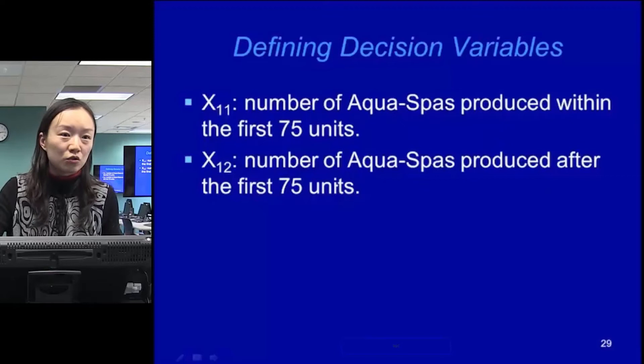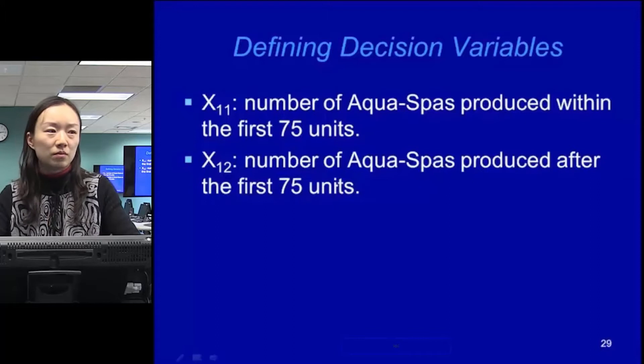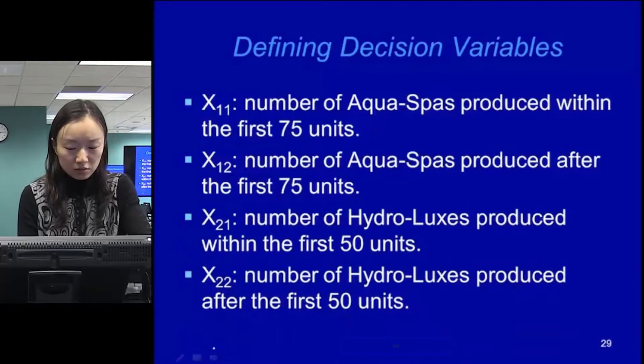We'll use x11 to represent the number of equal spots produced within the first 75 units, and x12 will be the number of equal spots produced after the first 75 units. Having two different variables is the way to deal with two profit rates in the objective function — include both situations, and just turn one off when it's not going to happen.